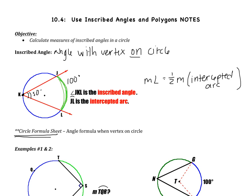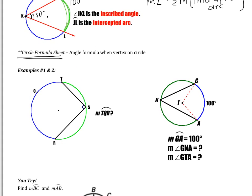It says circle formula sheet. You should have that by now, but we will fill it out in class, so don't worry about that. We have two examples. Example one and example two. Example number one says, what is the measure of TQR? So it's looking for this arc right here.